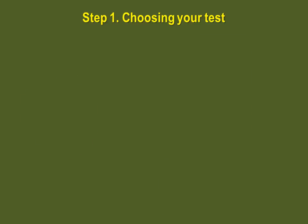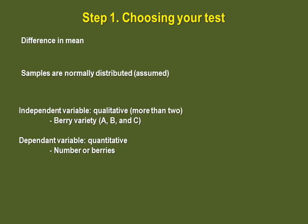The first step of course is to choose the test. Here we are looking for the difference between means. We assume the distributions are equal and we have an independent qualitative variable with three values.